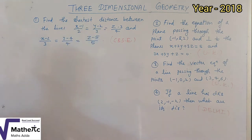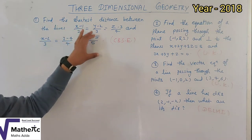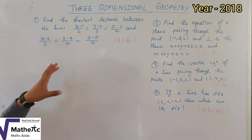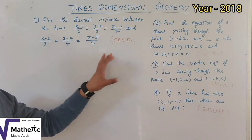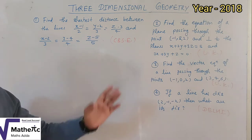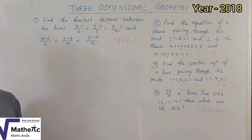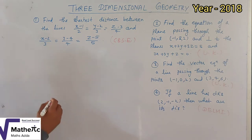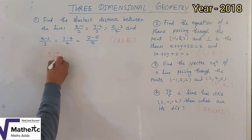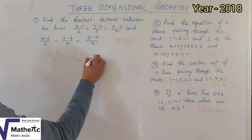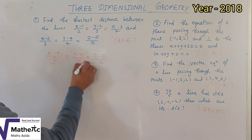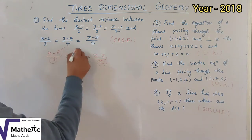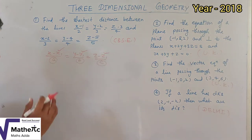The first question is: find the shortest distance. This topic we are not going to solve in excessive detail — we will use the formula and focus on how to apply it. The line is of the form x minus x1 upon a, y minus y1 upon b, z minus z1 upon c. The direction ratios are a, b, c and x1, y1, z1 is the point through which the line passes.